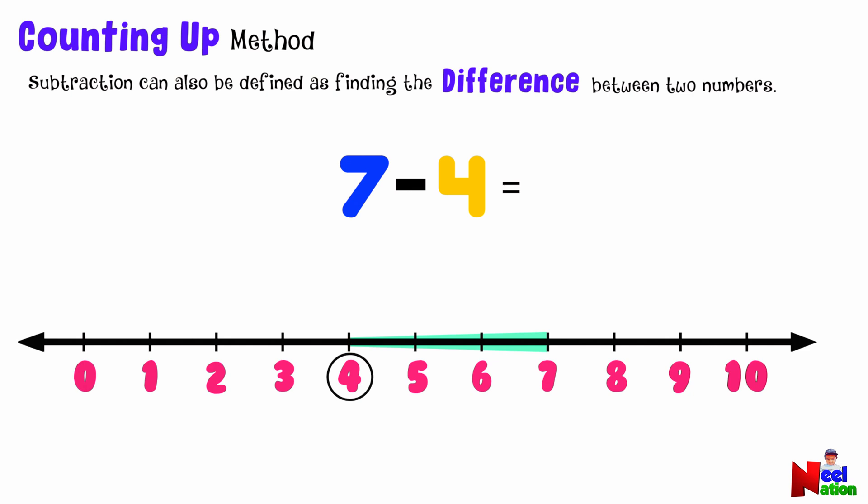After 4 we make a jump to 5, then another jump to 6, then one last jump to 7. How many jumps did we make? Let's count: 1, 2, 3. We made 3 jumps, so the difference between 4 and 7 is 3. That means 7 minus 4 equals 3.